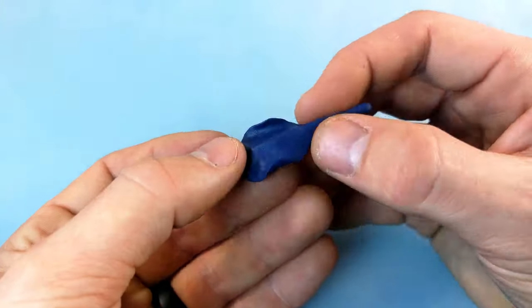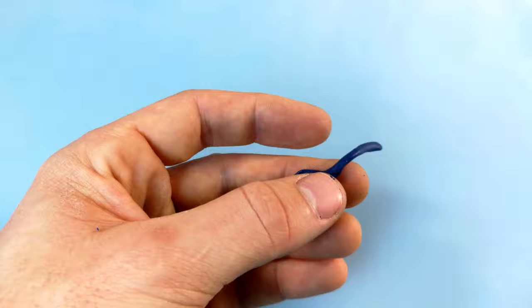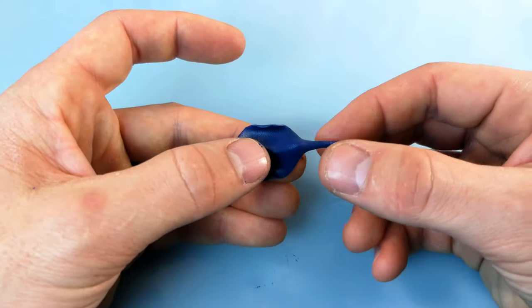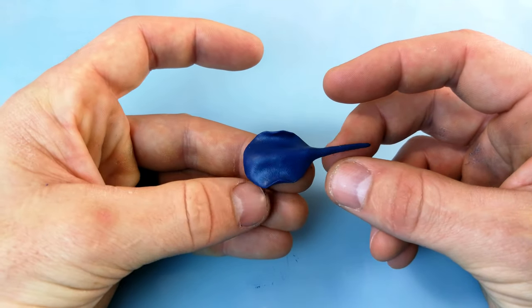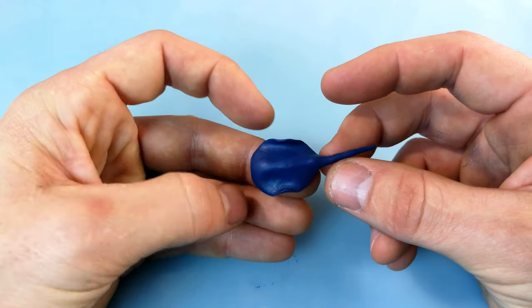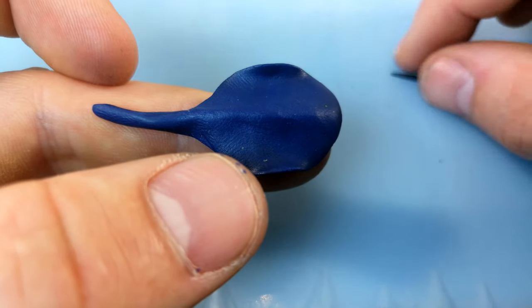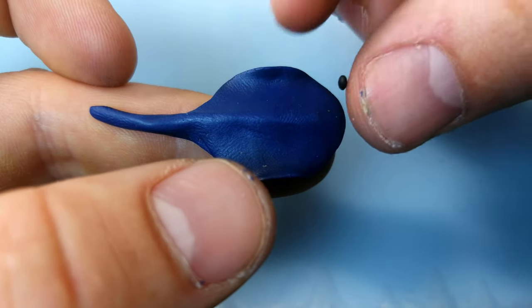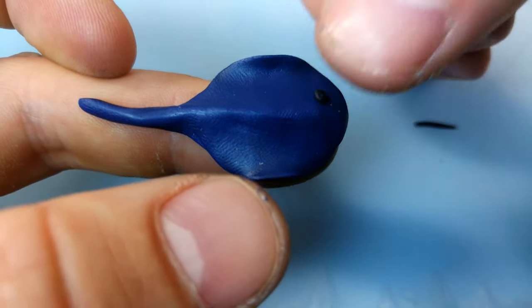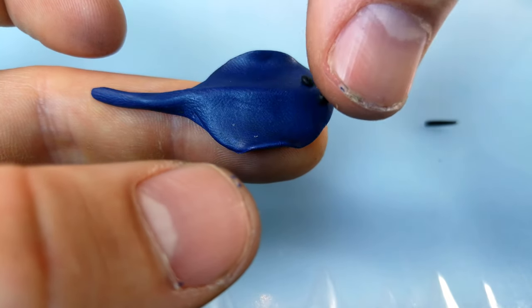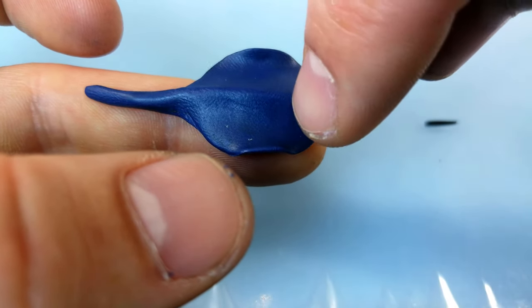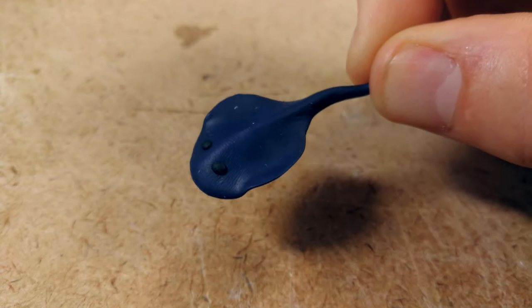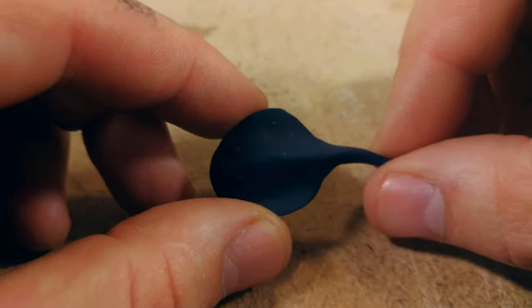What I did is I made a very small stingray shape out of this and then added the eyes and this would be the base and then I hardened this in the oven according to the instructions on the packet. This is what it looks like when you hardened it in the oven and now it's completely hard and I can start painting it.